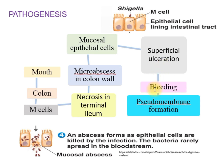They enter the mucosal epithelial cells where there can be superficial ulcers. These ulcers may bleed, and there is pseudomembrane formation. Because of this necrosis, abscesses, ulcer formation, hemorrhage, and pseudomembrane formation, there is mucus and blood in the stool. However, the bacteria never enters the bloodstream itself.